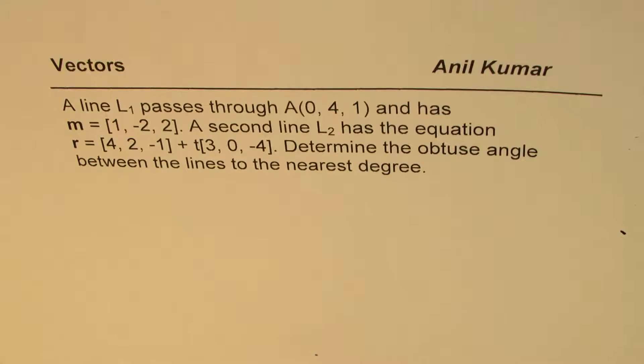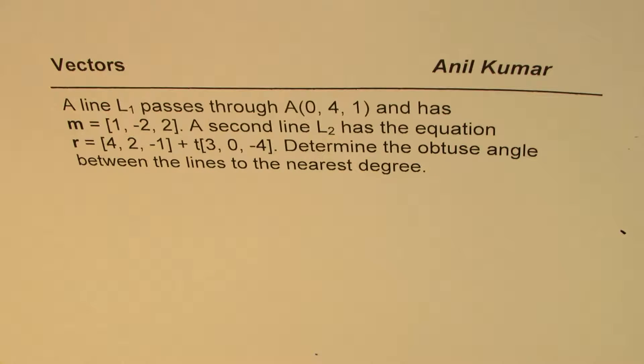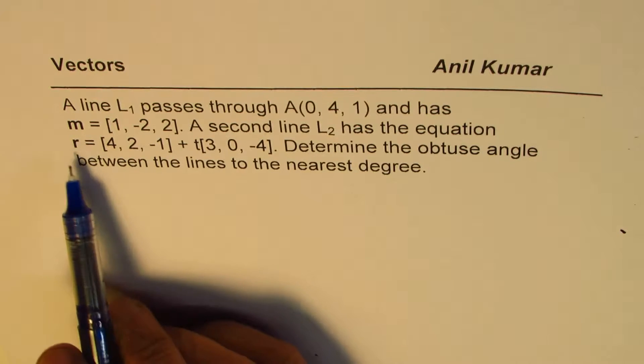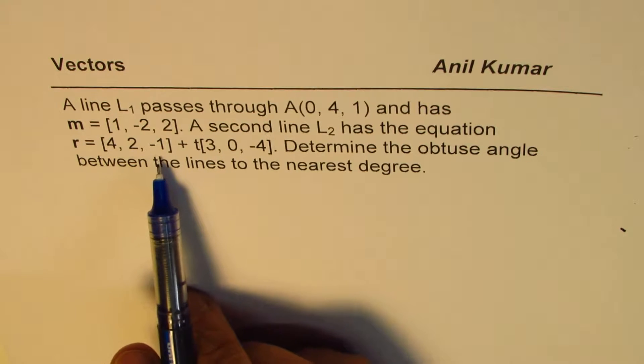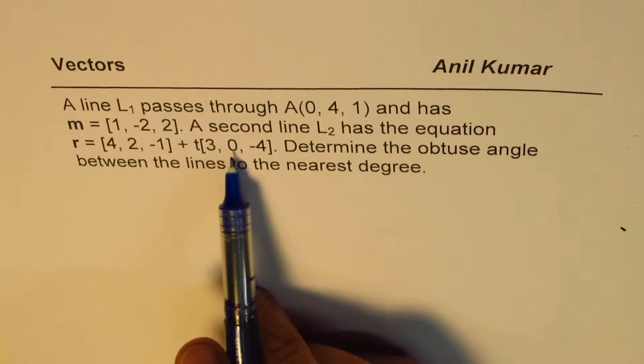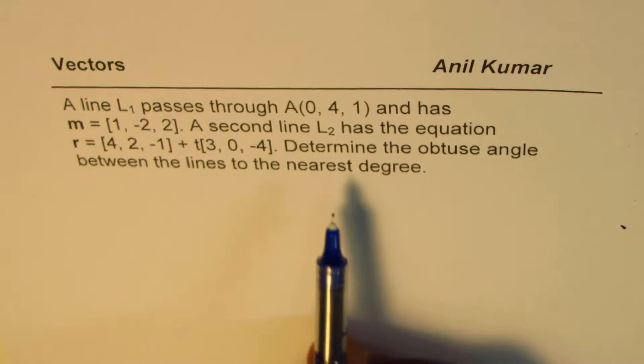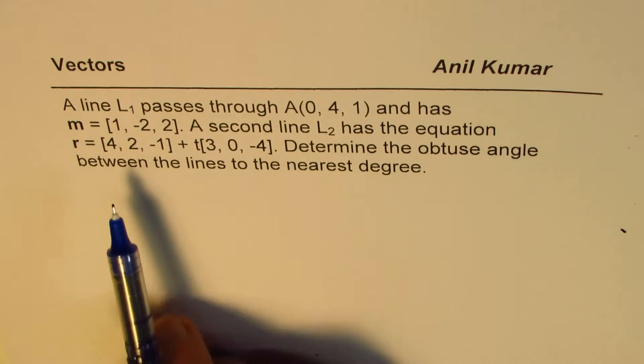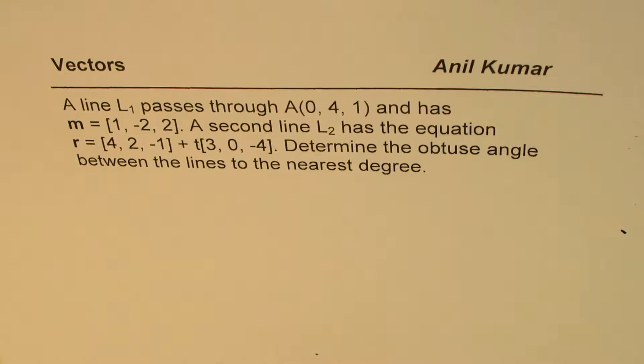The question here is, a line L1 passes through A(0,4,1) and has slope or direction vector M equals (1,-2,2). The second line L2 has the equation R equals (4,2,-1) plus T(3,0,-4). Determine the obtuse angle between the lines to the nearest degree.